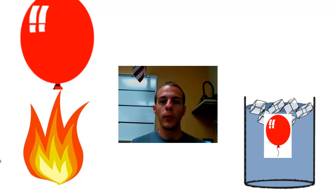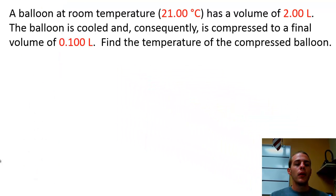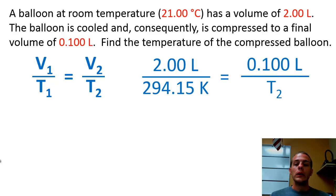So one more thing we're going to do before we end this video is to do a problem. So this problem says that you have a balloon at room temperature, and we're going to assume that to be 21.00 degrees Celsius. And this balloon has a volume of 2.00 liters. It says that the balloon is cooled and consequently is compressed to a final volume of 0.100 liters. And we are asked to find the temperature of that newly compressed balloon.